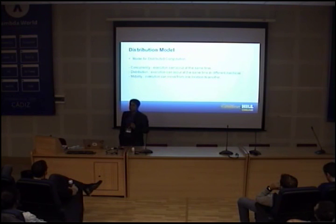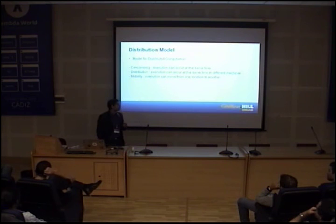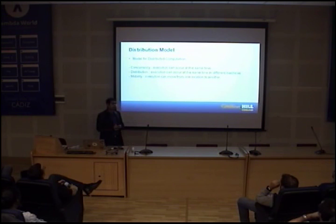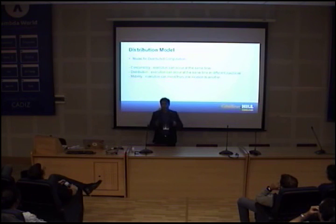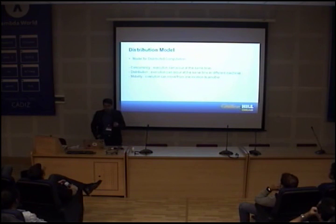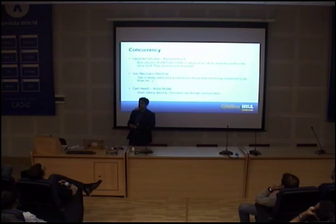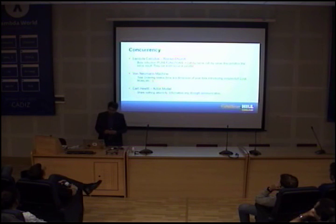Rather than say we need to implement a distributed system, let's define what a distributed system is. What is a model for distributed computation? We can identify at least three important properties. The first is concurrency: a system where execution can occur at the same time, processing multiple things simultaneously. Distribution: execution can occur at the same time in different locations, in different machines. And mobility: execution can move from one location to another. Let's explore a little bit more these properties and look at some computational models to see how they implement these concepts.